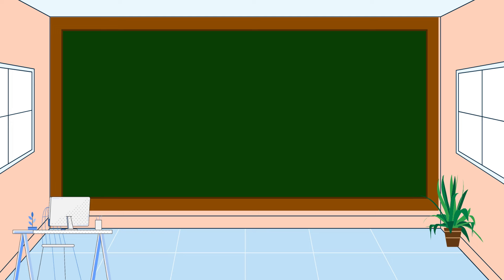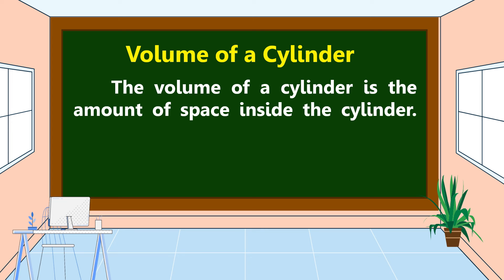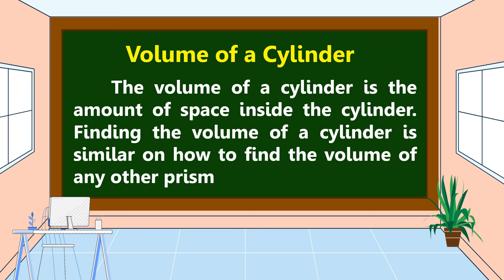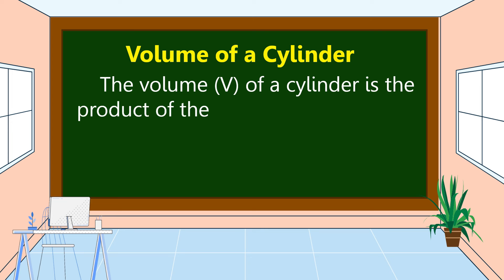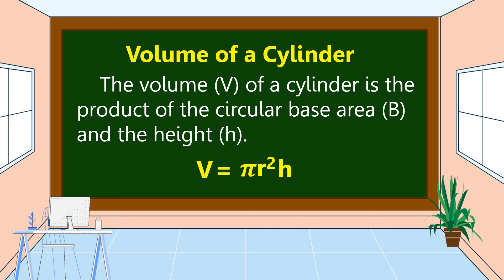First, we're going to discuss the volume of a cylinder. The volume of a cylinder is the amount of space inside the cylinder. Finding the volume of a cylinder is similar to how we find the volume of any other prism. The volume of a cylinder is the product of the circular base area, characterized by capital letter B, and the height, represented by small letter H. So we have V = π × r² × h.